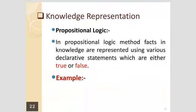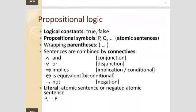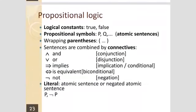In proposition logic, the method facts in knowledge are represented using various declarative statements which are either true or false. The examples in proposition logic include logical constants — that is, true or false — and proposition symbols, which are P and Q.